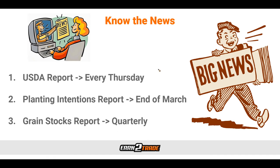As a corn futures trader, it's also important to know the news, because there are key reports that come out regularly that can cause quite a big stir in the market price of corn futures. Even if we're not interested in trading during the times of these releases because it might be a little too volatile, it's very important to be aware of when they are coming so we don't get blindsided by the increase in volatility. The first report we should talk about is the USDA report, which comes out every Thursday. The USDA releases a report on exports showing detailed analysis of the demand for corn exports, and a strong export outlook is often favorable for the corn market.